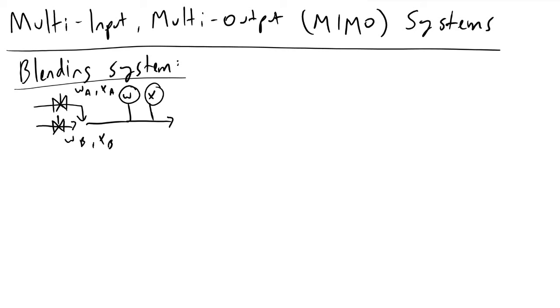Let's consider a basic blender. If you're working in the food industry, for example, you're going to have two streams coming together. You're going to be mixing some ingredients, and we'll have some kind of valve controller that controls the flow rate of these two streams that come together.